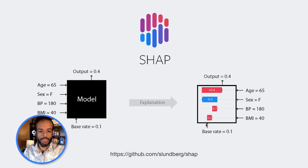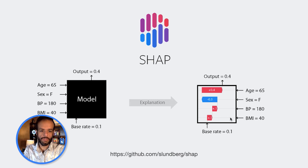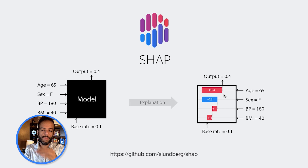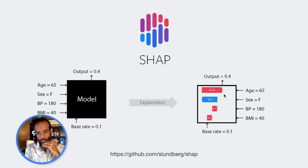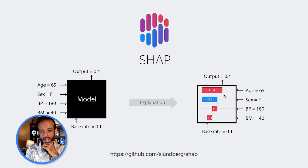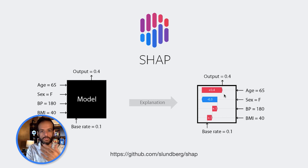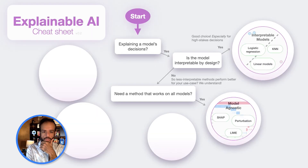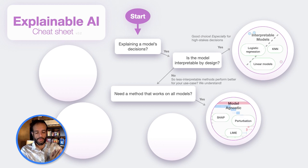For example, the BMI of 40 seemed to increase the value of the prediction, pushing it to the right. The blood pressure pushed it a little more to the right. Sex pushed it to the left, and age brought it all the way back to the right. Note that this is not how the model calculated its output — this is an explanation added on top, giving us insight into how this single prediction can be explained given all the examples seen previously. That's our second major group of explainability methods.